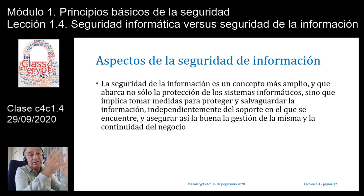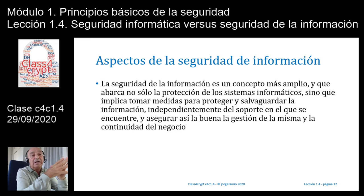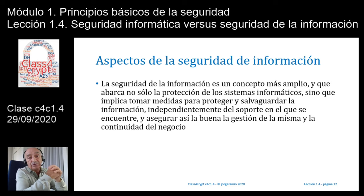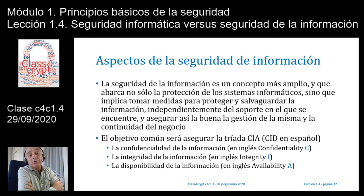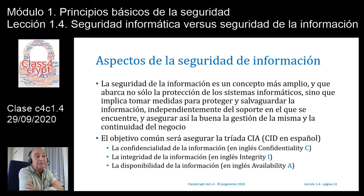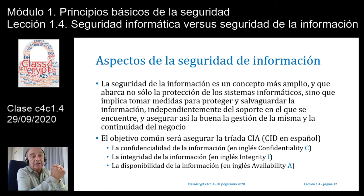Son palabras clave: es un concepto bastante más amplio. Ya estamos hablando de cosas estratégicas como la buena gestión de datos, la buena imagen de la empresa, etcétera. Una palabra muy importante en temas de gestión de la seguridad es la continuidad del negocio. El objetivo común de la seguridad de la información —como verán quienes estudien las normas ISO 27001 de certificación o el anexo ISO 27002 de controles— es asegurar la famosa triada CIA: confidencialidad, integridad y disponibilidad.